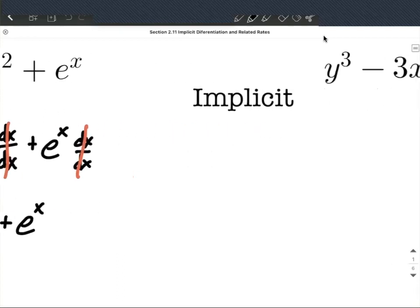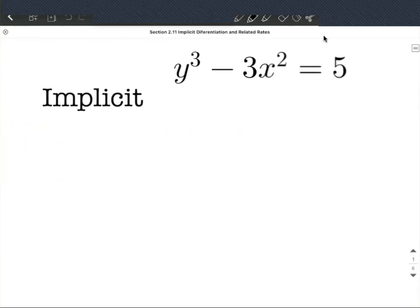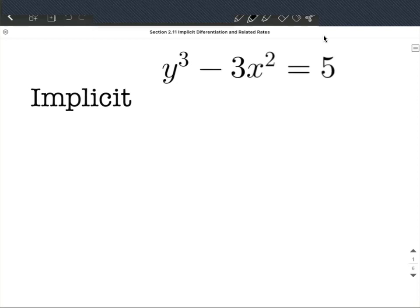Now let's take a look at an example we're going to implicitly differentiate. You'll notice in this example that we don't have y on one side all by itself from the beginning. There's this other term on this side as well.